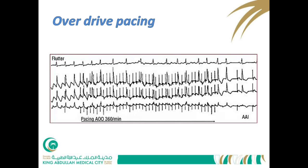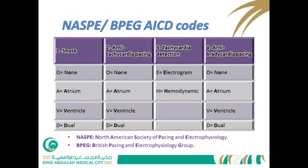The AICD also has its own code. The first position is the shock chamber — atrial, ventricular, or dual. The second is anti-tachycardia pacing — atrial, ventricular, or both. The third is tachycardia detection — by ECG analysis or hemodynamic changes such as metabolic variance or blood pressure. The fourth is anti-bradycardia pacing, as most AICDs have an integrated pacemaker enabling them to pace the atrium, ventricle, or both.